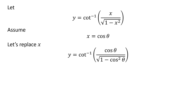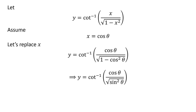Replacing x by our assumed value in y gives us y is equal to the inverse cotangent of cosine of theta upon the square root of 1 minus the square of cosine of theta.